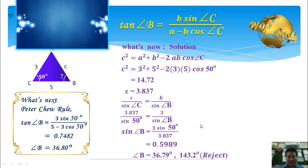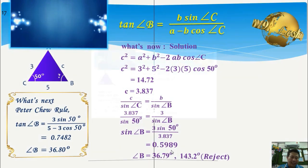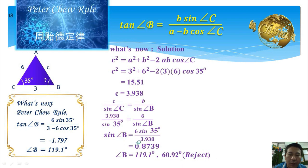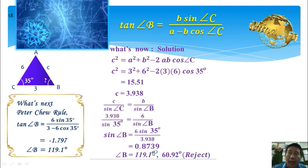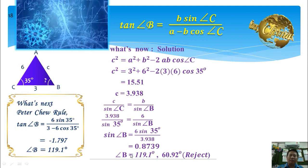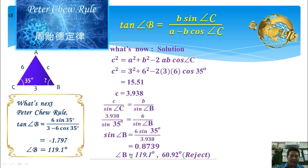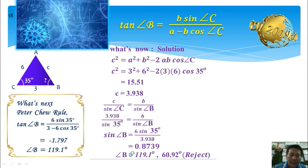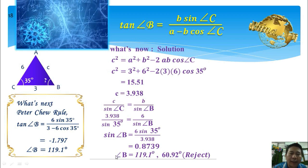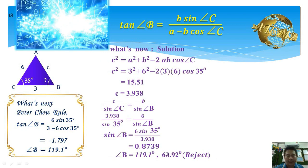For example, when sine B equals positive 0.5989, angle B is correctly identified as acute at 36.79 degrees. But in the next example, sine B is also positive at 0.8739, yet angle B is actually an obtuse angle — 119.1 degrees. Students are very likely to make mistakes in the final answer. When students get sine B equal to 0.8739, they usually assume angle B is 60.92 degrees — the wrong answer.